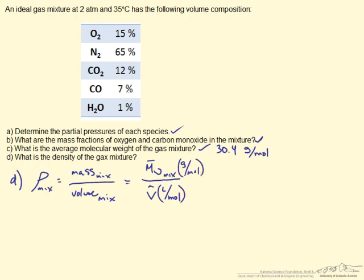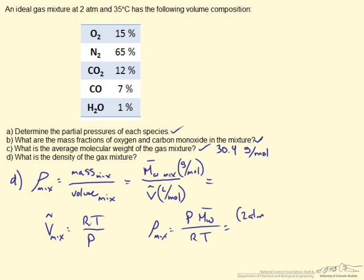That way the moles cancel and we'll get our grams per liter. This allows us to use the ideal gas relationship, which relates the molar volume of the gas, in this case a mixture, to gas law constant R times the temperature over the pressure. If we substitute this into our density equation, what we see is that the density of the mixture is going to be equal to the pressure times the average molecular weight over the gas constant times the temperature. We know all of these values, so we can just start plugging them in.